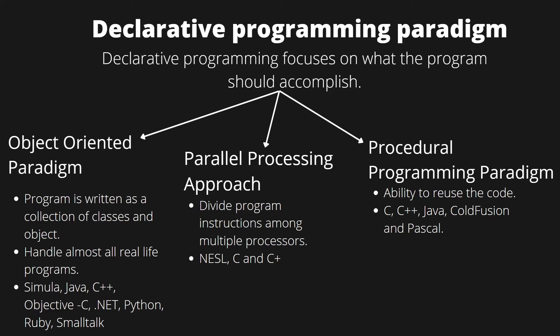In the object-oriented paradigm, a program is written as a collection of classes and objects, and it can handle almost all real-life programs. For example, Simula, Java, C++, Objective-C, .NET, Python, Ruby, and Smalltalk are programming languages under the object-oriented paradigm, and they satisfy the definition of the declarative programming paradigm.